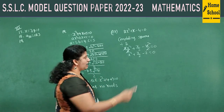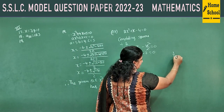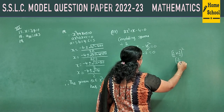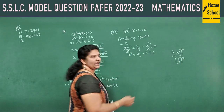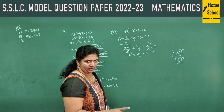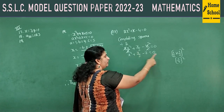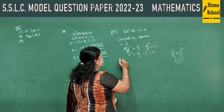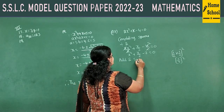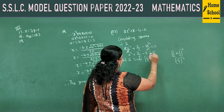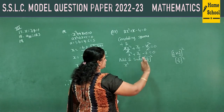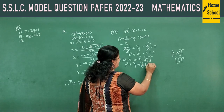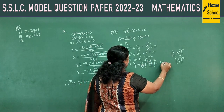Second step: observe the x coefficient, which is 1/2. Third step: multiply by half and square it — you get (1/4)². Add and subtract (1/4)² in the equation: x² + x/2 + (1/4)² − (1/4)² − 2 = 0.